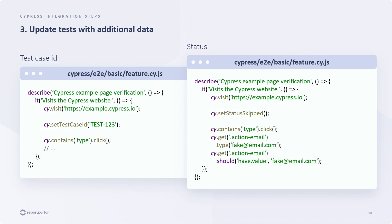The next type of data that can be incorporated into the report is the test case ID. If you wish to identify your test as a specific test case from a test case management system such as Jira, you can utilize a test case ID. This can also be established using a Report Portal command — simply invoke the setTestCaseID command and input a value. Note that if you alter an item's test case ID, the history of its prior executions will not be displayed, as they will be regarded as results from a different test case. Let's assign the test case ID to one of our tests and observe the results.